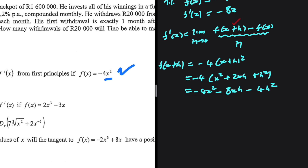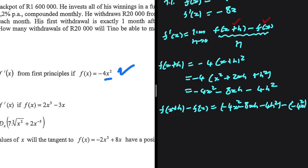That is f of x plus h. If we include minus f of x, we can say f of x plus h minus f of x equals minus 4x squared minus 8xh minus 4h squared, minus f of x which is minus 4x squared. As you can see, minus 4x squared minus minus 4x squared equals zero. So f of x plus h minus f of x is just equals to minus 8xh minus 4h squared.